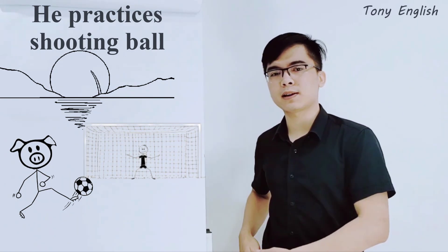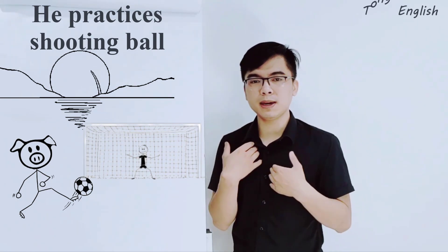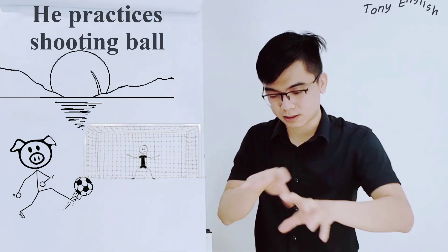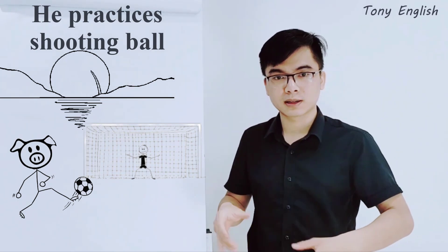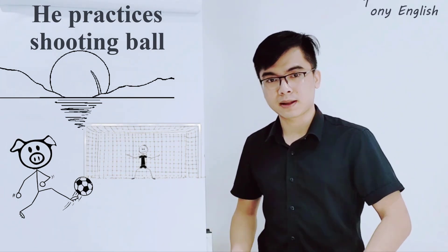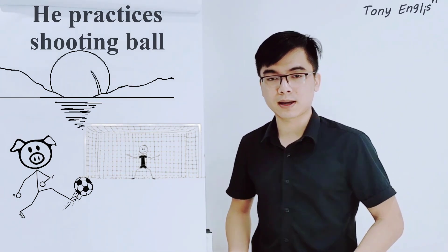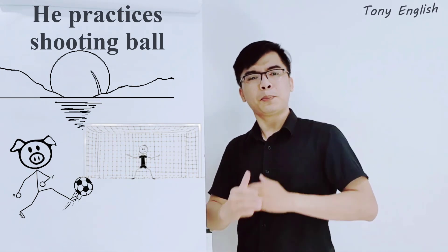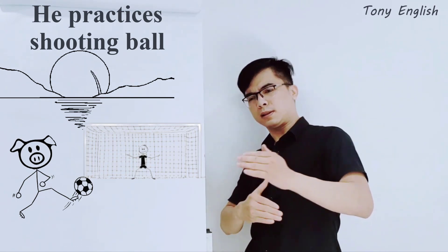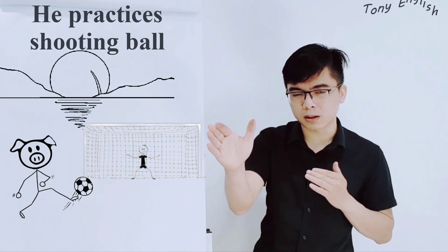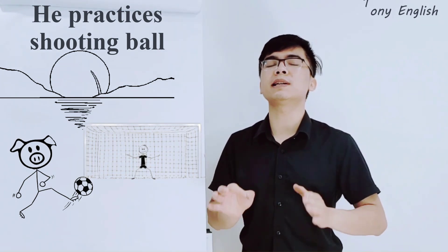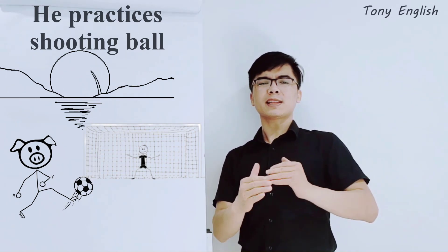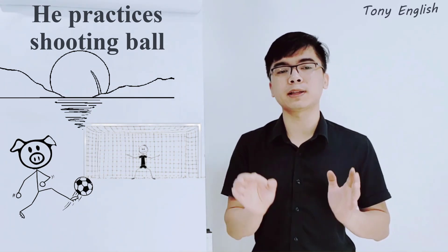If you cannot use the leg, you can see me and I use my hand. Because this character cannot — cannot look at my leg. So we can use the hand. He practiced shooting ball. One, two, three, go. He practiced shooting ball.